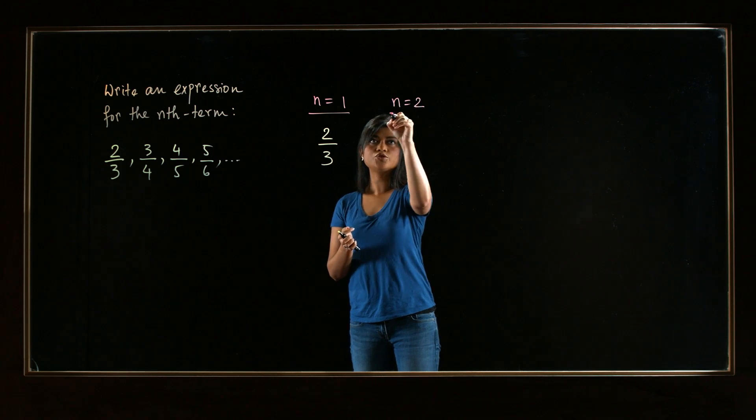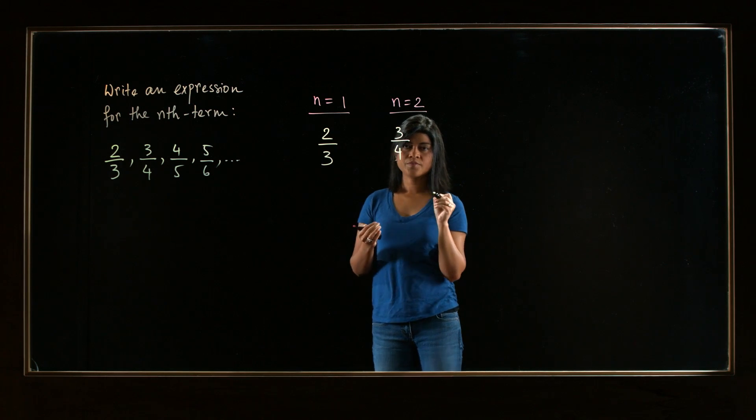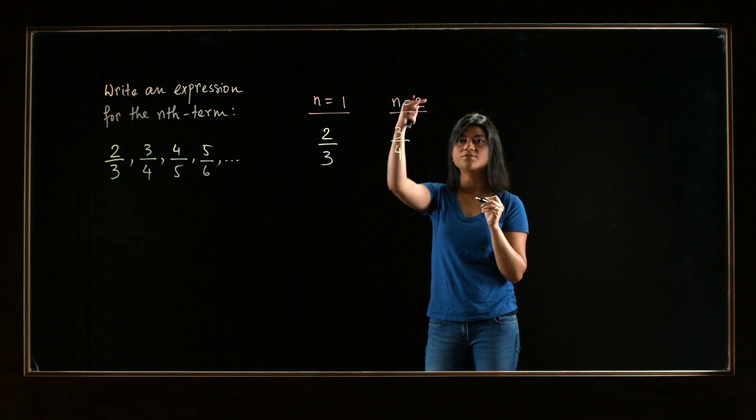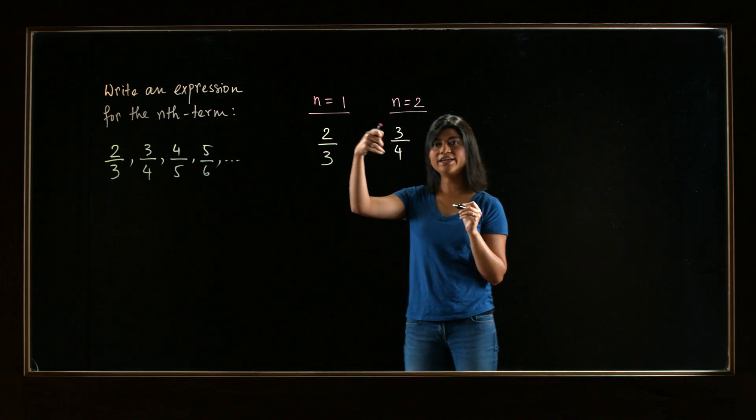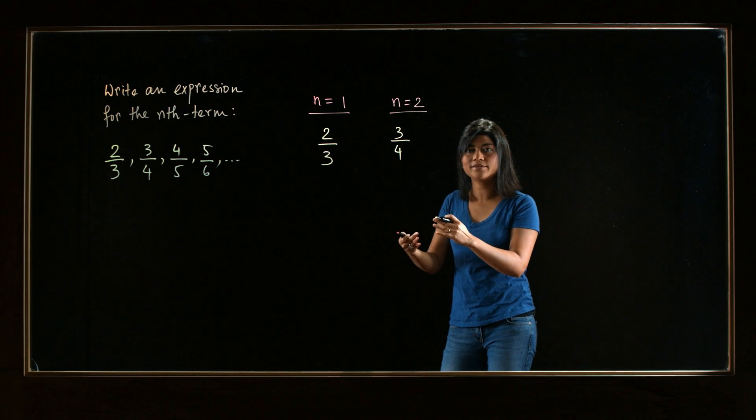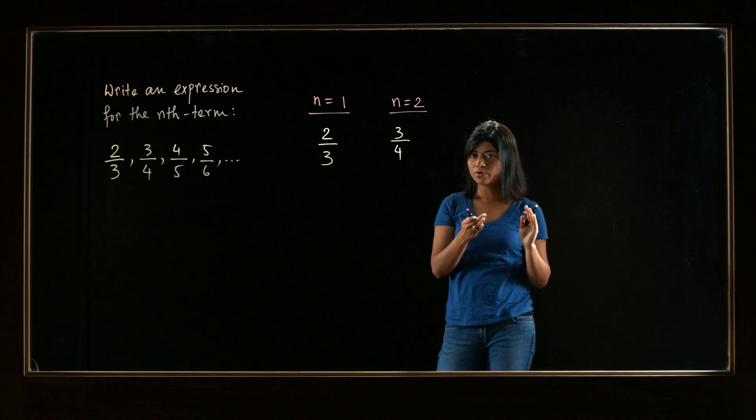So for n equals 2, the second term is 3 over 4. Again, the thought should be, how can I write 3 and 4 in terms of 2? And then, when you rewrite things, you will see there's a pattern. Or you have to find that pattern. So that we can use that pattern to write down our general term.